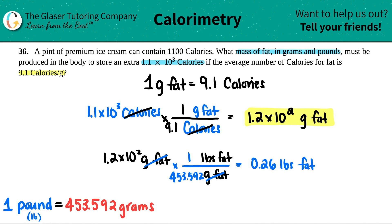So almost a quarter of a pound, which isn't all that much, so eat that ice cream, it's okay. Here are your two amounts: the grams and the pounds of fat that would be produced in order to house that amount of energy in the body.